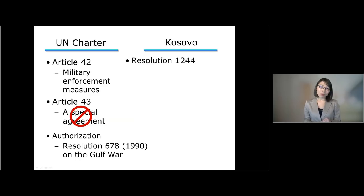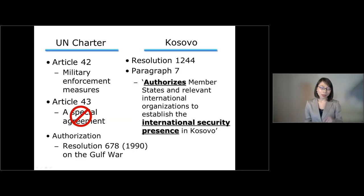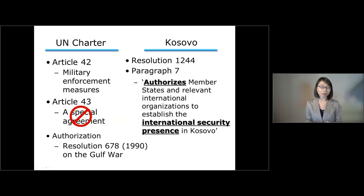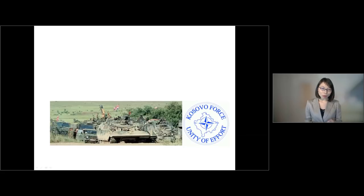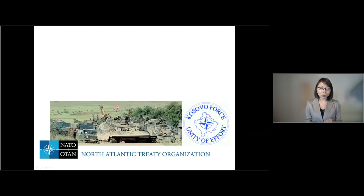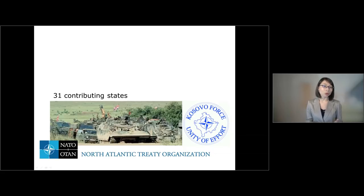This was exactly what happened in the case of Kosovo. Under Resolution 1244, paragraph 7, the UN Security Council authorized member states and relevant international organizations — in this case NATO — to establish an international security presence, which was KFO, Kosovo force. Kosovo force was established according to Resolution 1244 and managed by NATO, the North Atlantic Treaty Organization. At present, as many as 31 states are contributing their troops to sustain the operation of KFO in Kosovo.